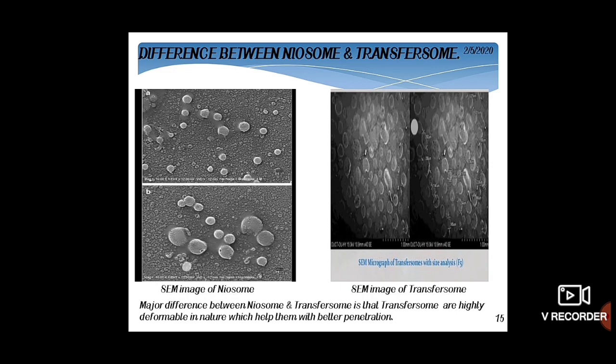The major difference between Niosomes and Transferosomes is that Transferosomes are highly deformable in nature, which allows better penetration compared to Niosomes and liposomes. The flexibility of the Transferosome membrane reduces the risk of complete vesicle rupture in the skin and allows Transferosomes to follow the natural water gradient across the epidermis when applied under non-occlusive conditions.